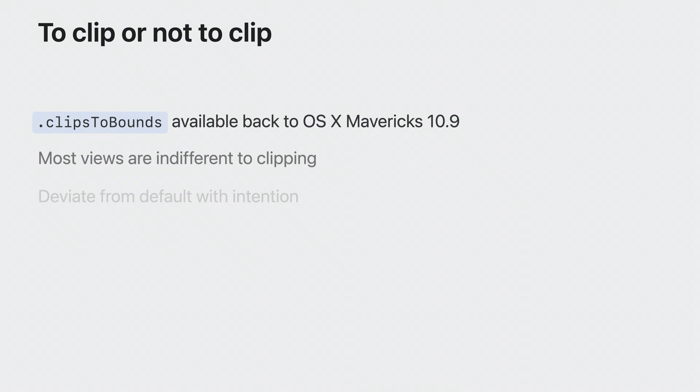The new NSView clipsToBounds property is available all the way back to OS X Mavericks 10.9, but on older OSes, turning off clipsToBounds may have some rough edges, so test accordingly. Most views will behave just fine with clipping on and off. Some container views make their own explicit decisions — NSClipView, true to its name, behaves this way. There may be specific instances where you need to selectively change a view's default clipping behavior, so consider on a case-by-case basis which of your views require an explicit clipsToBounds value.